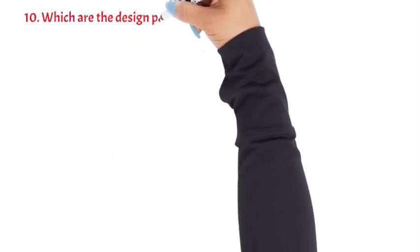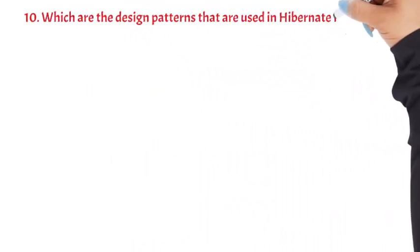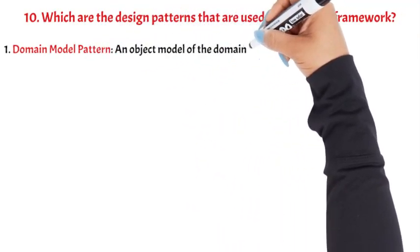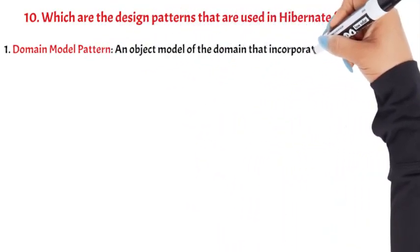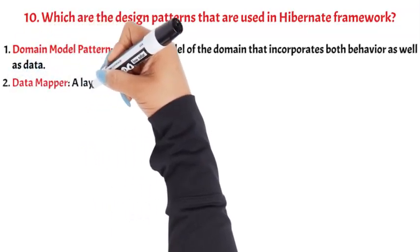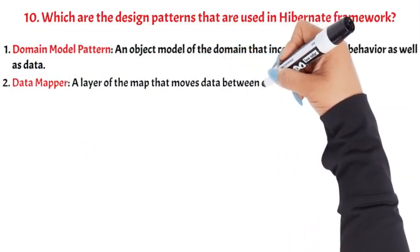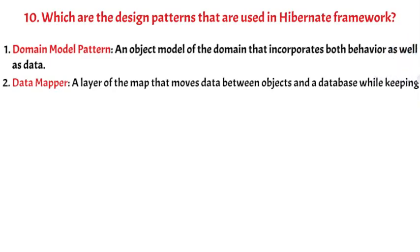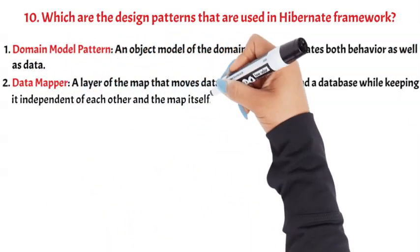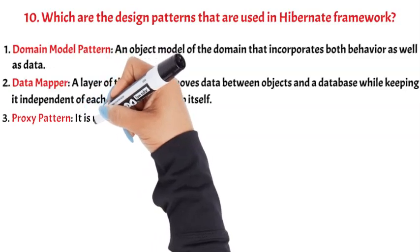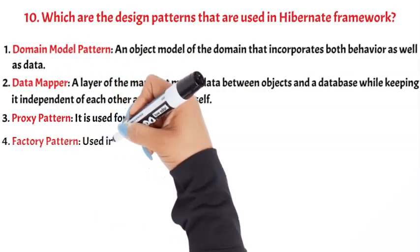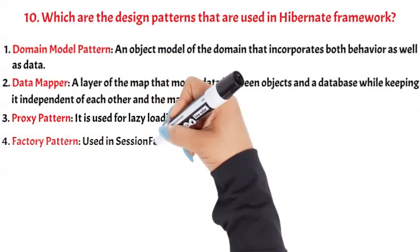Question 10: Which design patterns are used in the Hibernate framework? Domain Model Pattern — an object model of the domain that incorporates both behavior as well as data. Data Mapper — a layer that moves data between objects and a database while keeping them independent of each other and the mapper itself. Proxy Pattern — used for lazy loading. Factory Pattern — used in Session Factory.